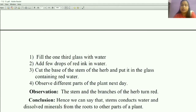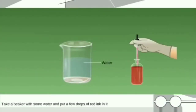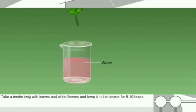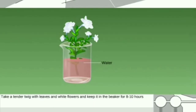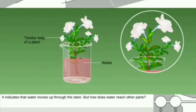When you observe the different parts of the plant the next day, the observation is that the stem and branches of the herb turn red. Take a tender twig with leaves and white flowers, keep it in the beaker for 8 to 10 hours. After 8 to 10 hours, you observe red-colored lines through the stem, leaves, and flowers. This indicates that water moves up through the stem.